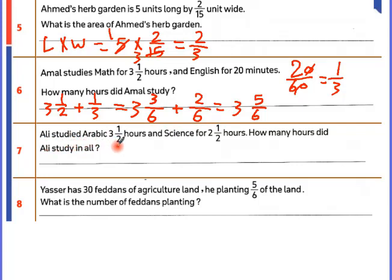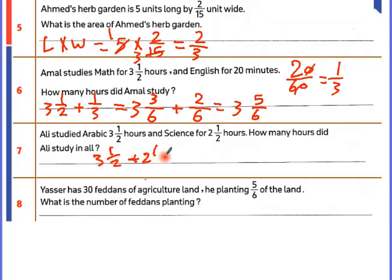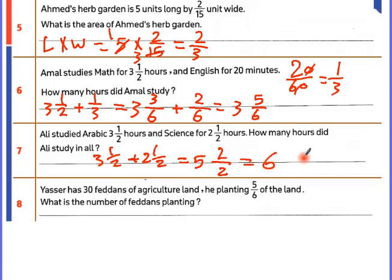Ali studied Arabic for 3 and a half hours and science for 2 and a half hours. How many hours did Ali study in all? Three and a half plus two and a half: same denominator 2, numerators 1 plus 1 equals 2 over 2 equals 1. Whole numbers 3 plus 2 equals 5. Total is 6 hours.